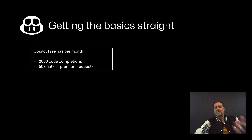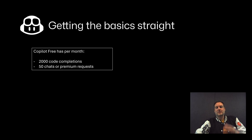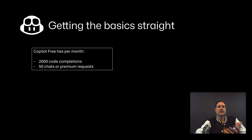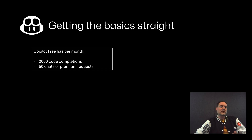Before we dive into what premium requests are, we first need to make sure we have the same understanding of the basics. Copilot Free gives you 2,000 code completions. While you're typing, it can complete the rest of the line or give you multiple lines of code. Every time it does that, it counts as one code completion. With Free, you get 2,000 code completions per month.